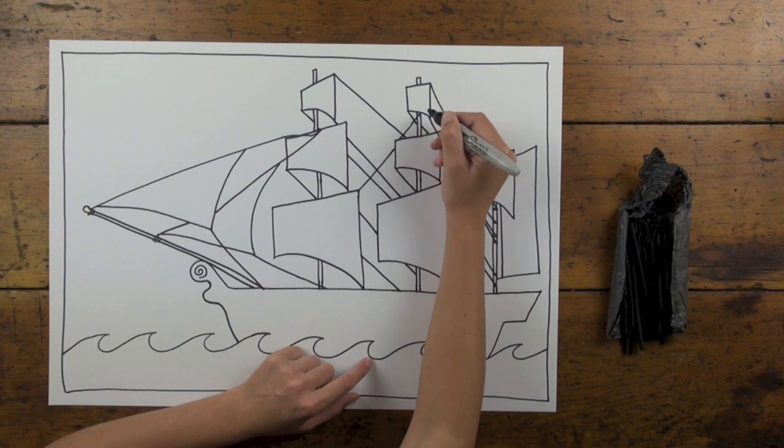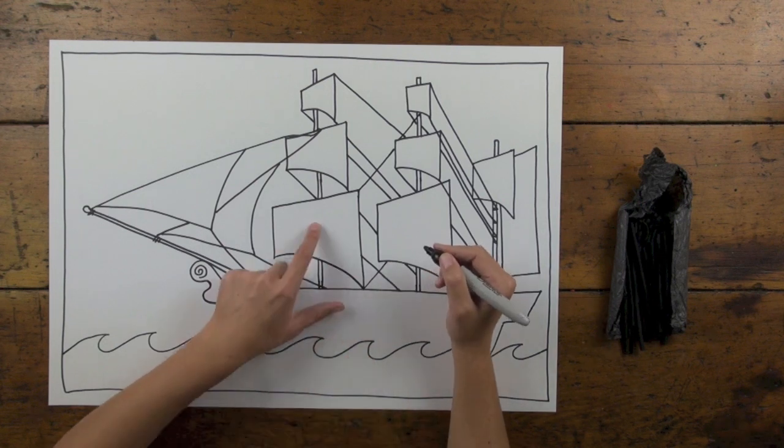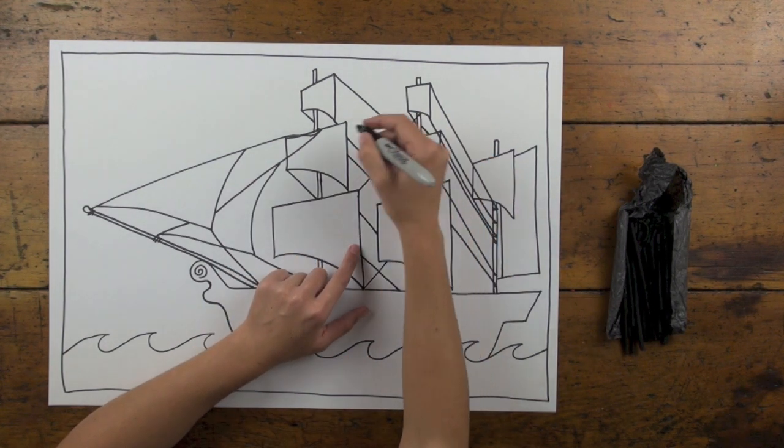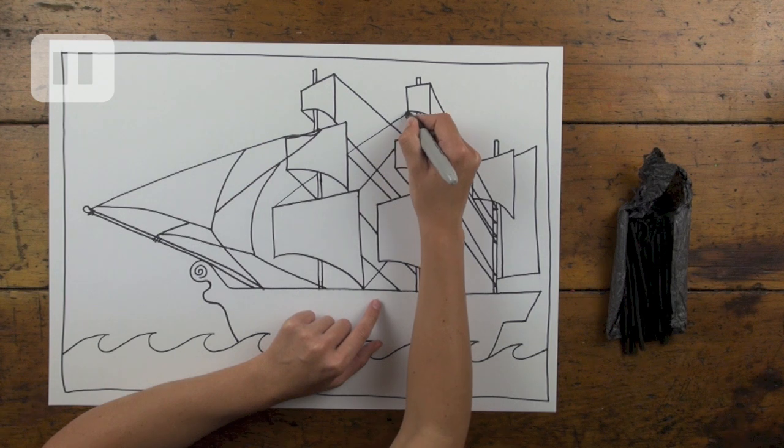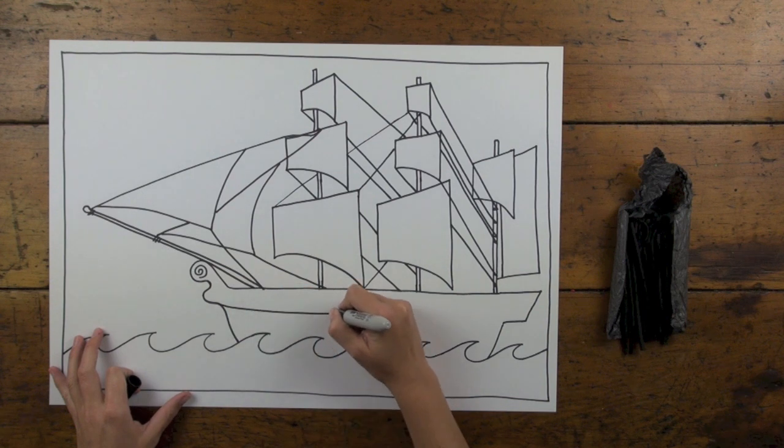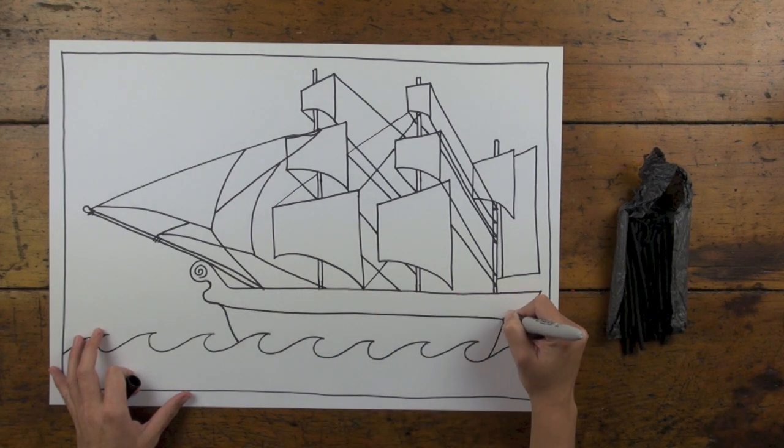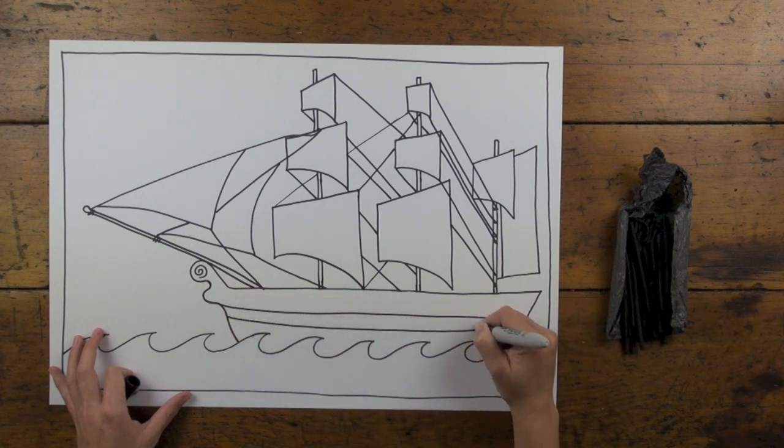I'll do a few the other direction as well, going up. So I'll pretend that these sails are attaching behind over this side. I might just add a few lines across my boat as well so that it looks like timber.